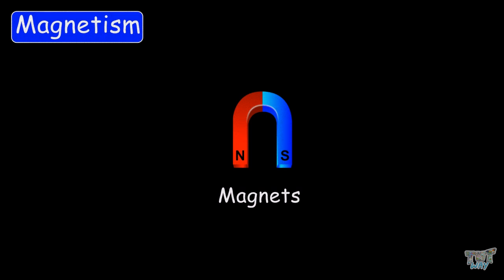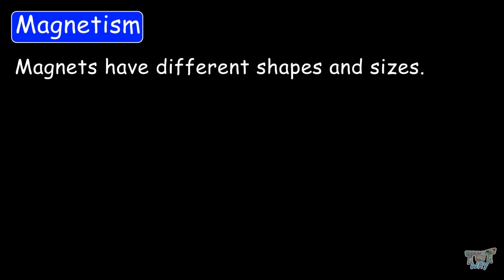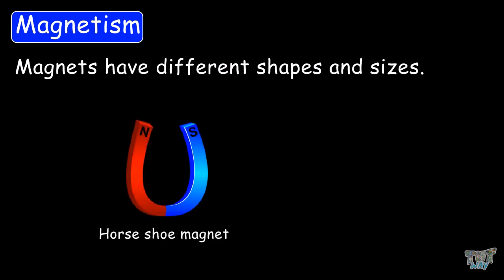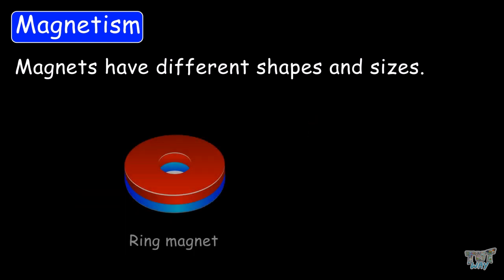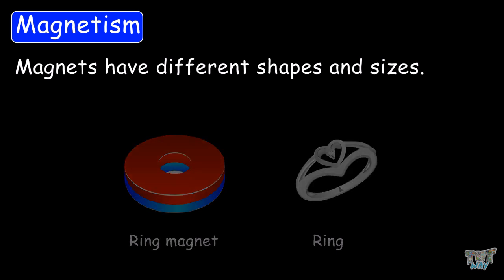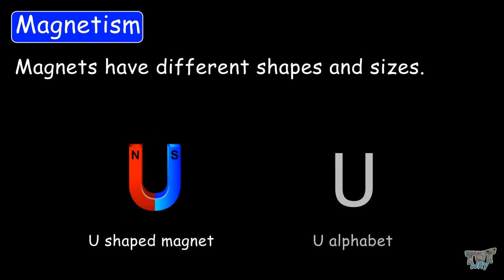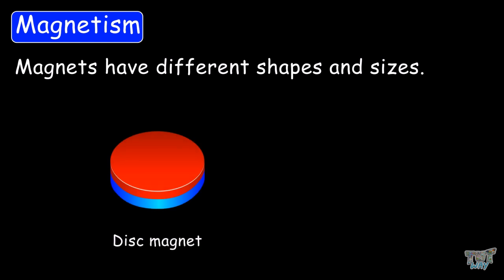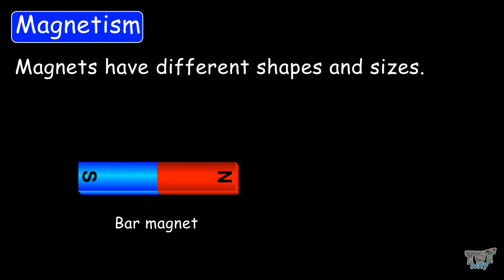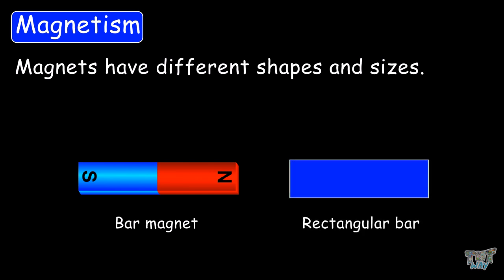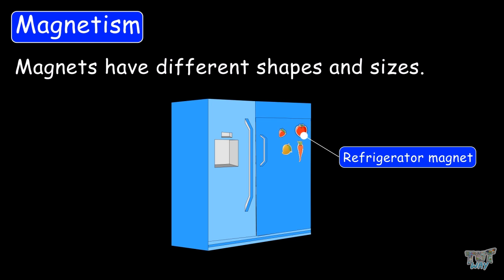You might have seen magnets. Magnets have different shapes and sizes. The shape of a horseshoe magnet is like the shoe of a horse. The cylindrical magnet has the shape of a cylinder. The ring magnet is in the form of a ring. A U-shaped magnet looks like a U. The disc magnet has a circular shape. Bar magnets look like a rectangular bar. And refrigerator magnets are very popular and come in a variety of shapes and sizes.